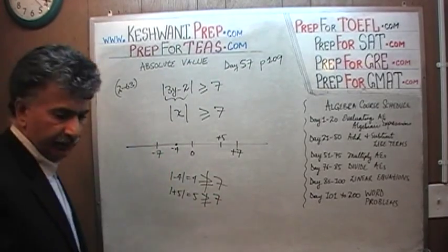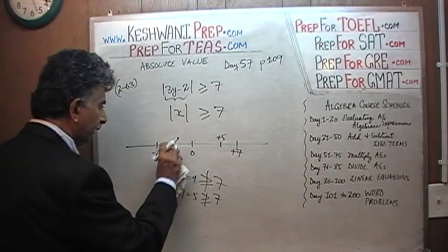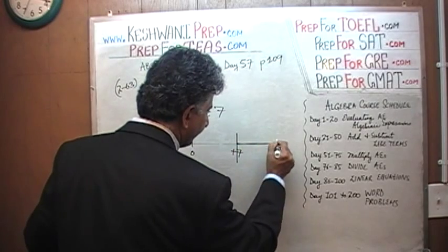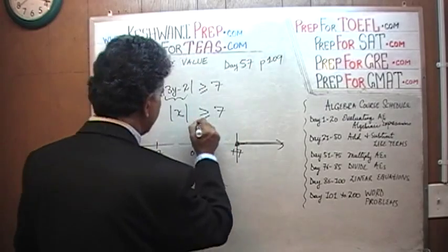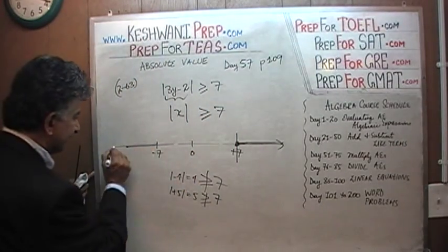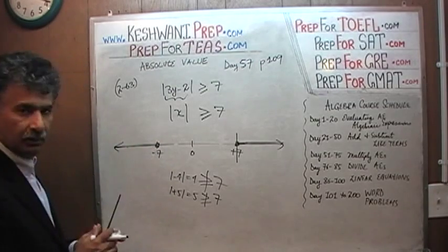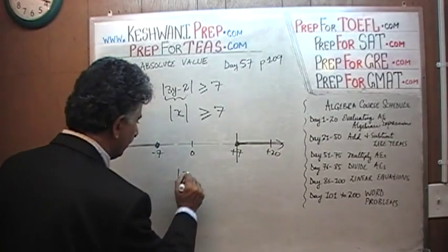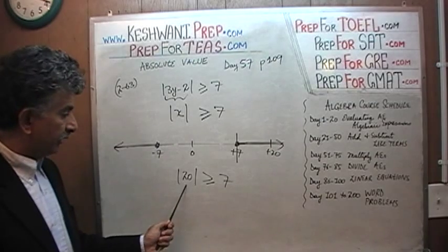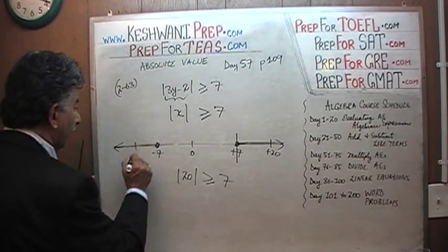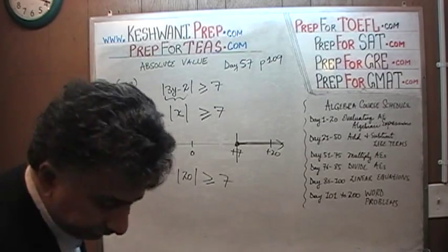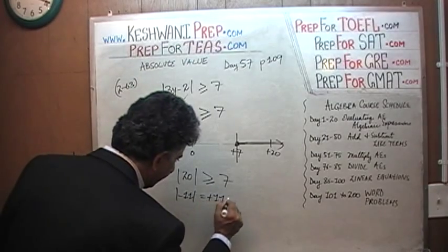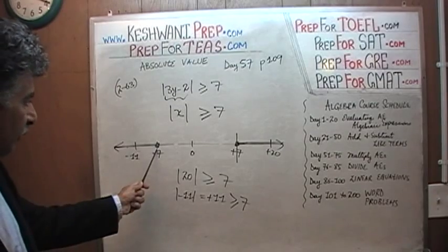So the absolute value inequality tells us that x must be either more than 7 — in this region with a closed circle since we have an equal sign — or less than negative 7, again with a closed circle. For example, x could be positive 20: the absolute value of 20 is 20, which is more than or equal to 7. Or x could be negative 11: the absolute value of negative 11 is positive 11, which is also more than or equal to 7. The solution falls in one of these two outer regions.